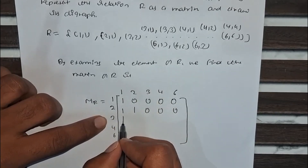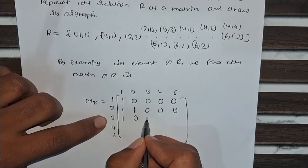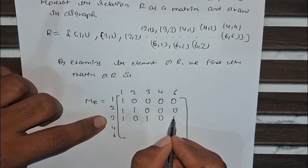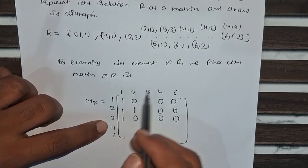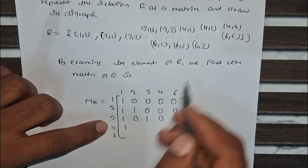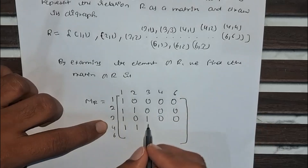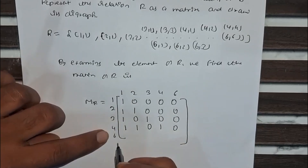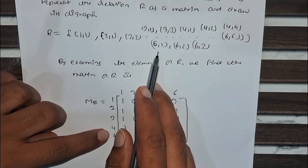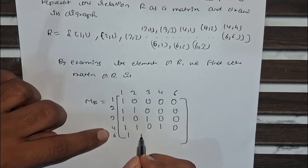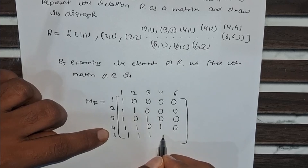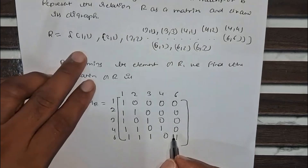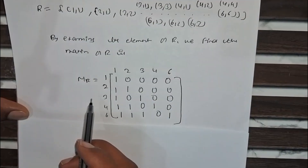For row 2: 2 to 1 is 1, 2 to 2 is 1, 2 to 3 is 0, 2 to 4 is 0, 2 to 6 is 0. For row 4: 4 to 1 is 1, 4 to 2 is 1, 4 to 3 is 0, 4 to 4 is 1, 4 to 6 is 0. For row 6: 6 to 1 is 1, 6 to 2 is 1, 6 to 3 is 1, 6 to 4 is 0, 6 to 6 is 1. This is our matrix.